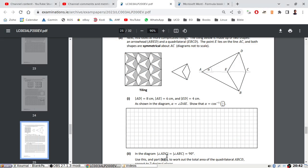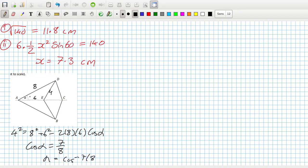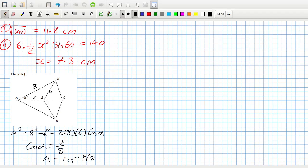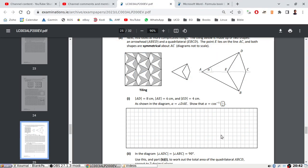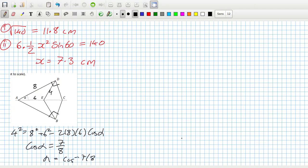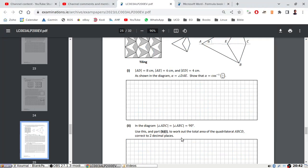In the diagram, angle ADC equals angle ABC, which equals 90 degrees. Okay, 90s here. Use this and part B1 to work out the total area.